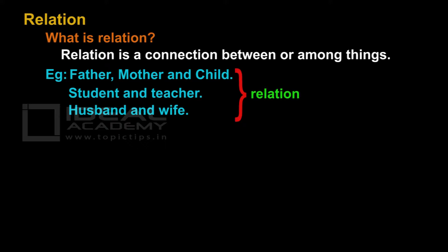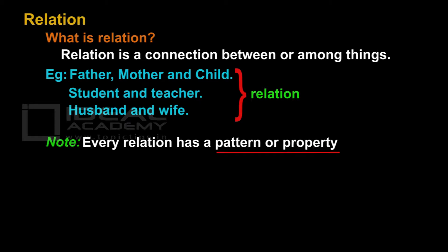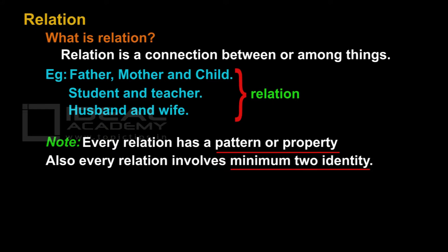Note these points: every relation has a pattern or property. We can see that in the examples — each of them have a pattern. For example, father, mother and child — the relationship is that they are in a family. Second point: every relation involves a minimum of two identities. For a relation to exist, it should have a minimum of two identities.